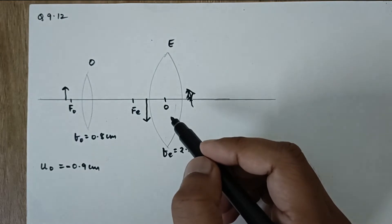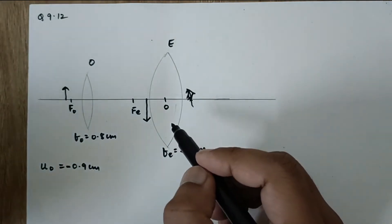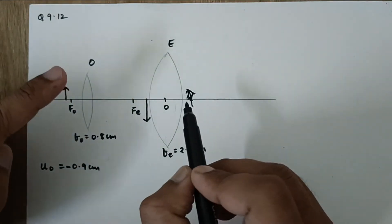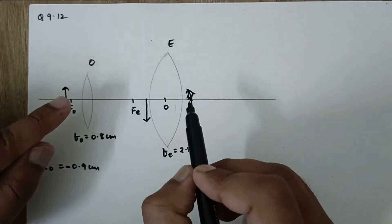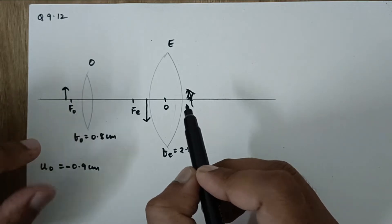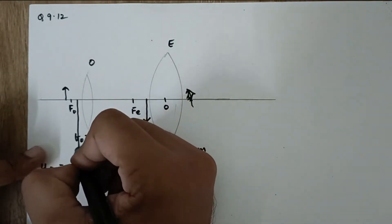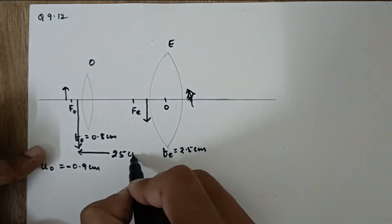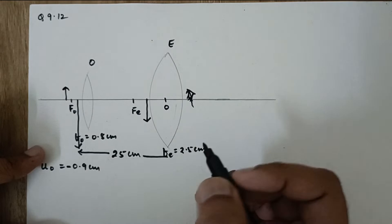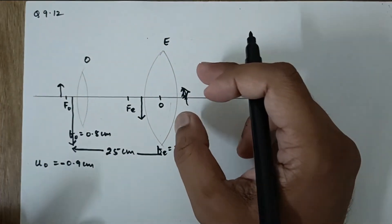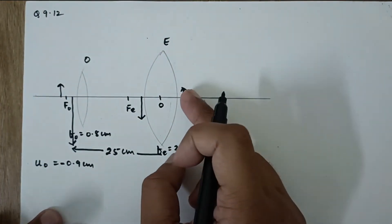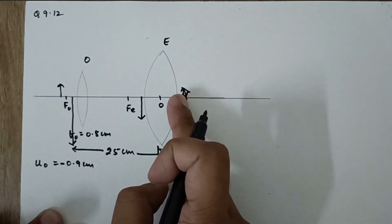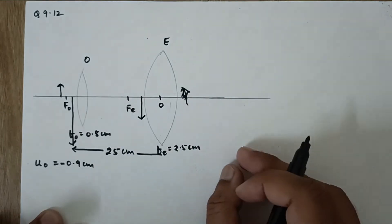Now in the question they have already said that a person with normal near point which means it can see very clearly the image at 25 cm distance, which means that the final image is formed at a distance of 25 cm. You have to pick up the words that the person with normal near point which means if you are looking from here you are able to see the image at 25 cm. Normal near point is at a distance of least distance from distinct vision.